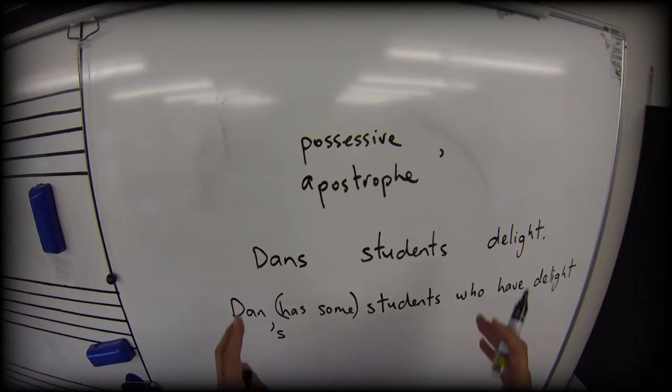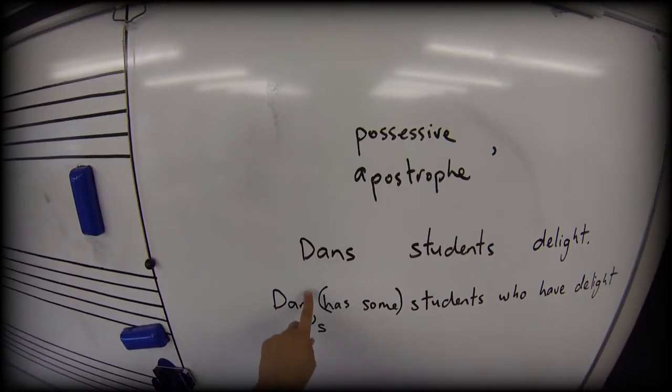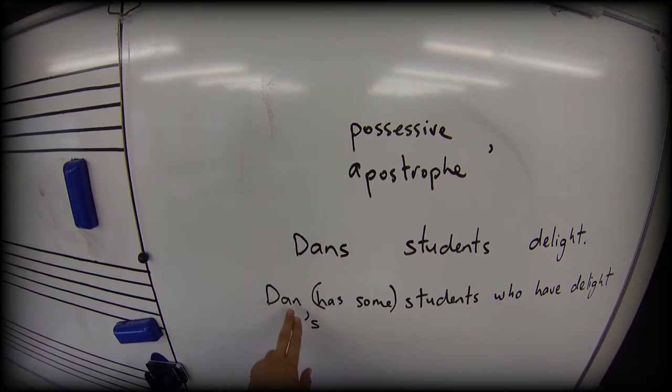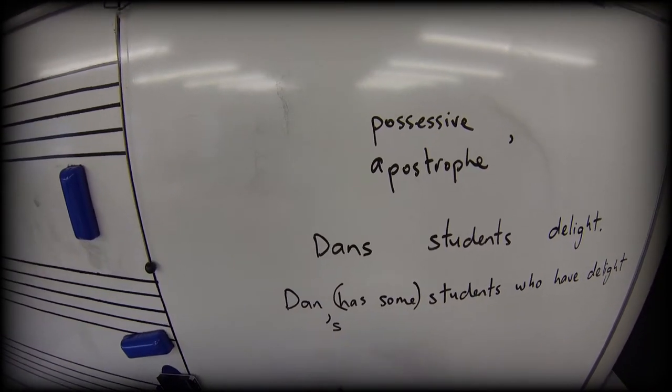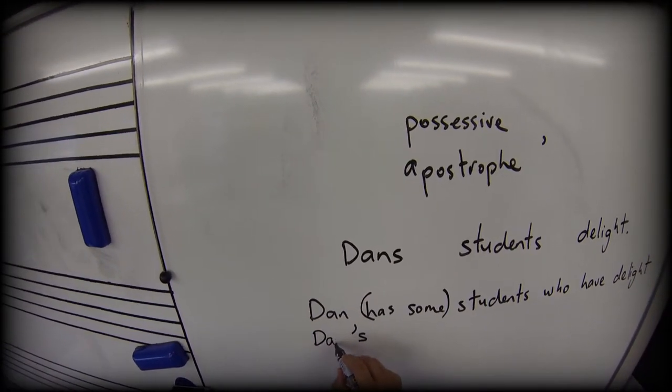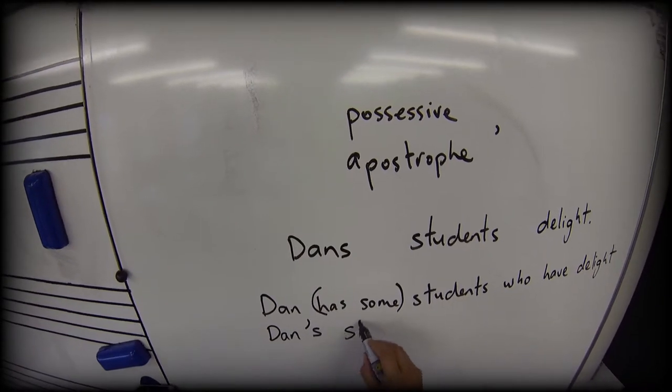And you see, because I've written that out in full, I know where the apostrophe goes. There's the word Dan, then apostrophe, then S. So I say Dan's students.